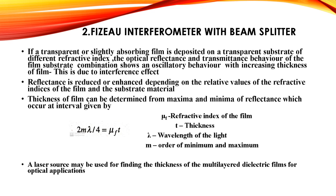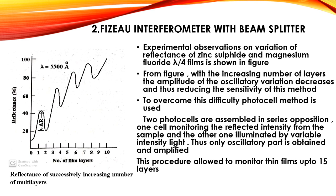A laser source may be used for finding the thickness of multi-layer dielectric films for optical applications. The reflectance of successively increasing numbers of multi-layers is shown experimentally — for example, the variation in reflectance of zinc sulfide and magnesium fluoride lambda/4 films. With an increasing number of layers, the amplitude of the oscillatory variation decreases, reducing the sensitivity of this method. To overcome this difficulty, a photocell method is used: two photocells are assembled in series, one monitoring reflected intensity from the sample and the other illuminated by variable intensity light, so only the oscillatory part is obtained and amplified. This allows monitoring of thin films up to 15 layers.